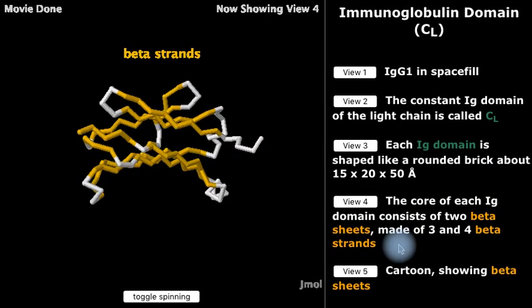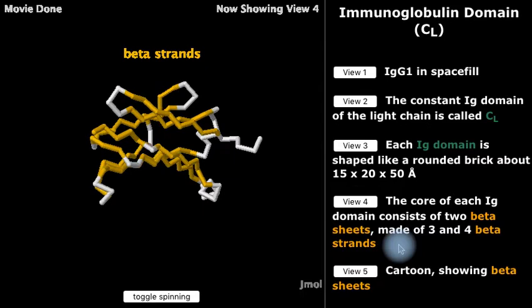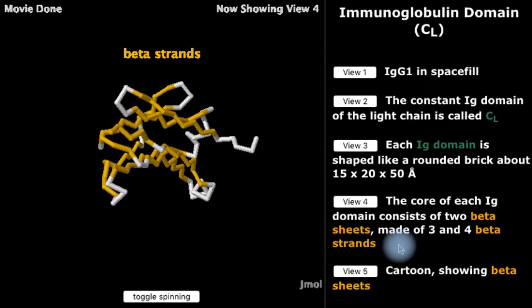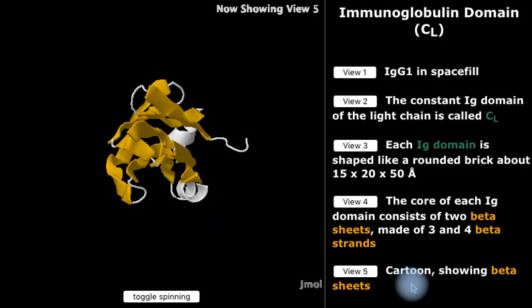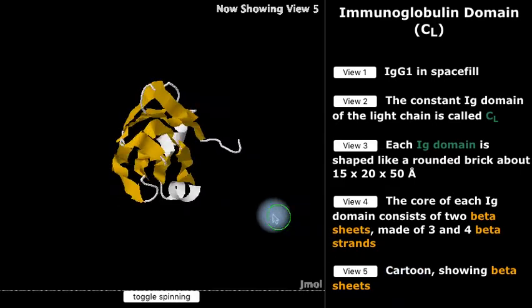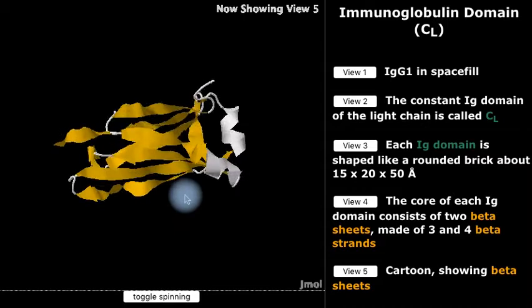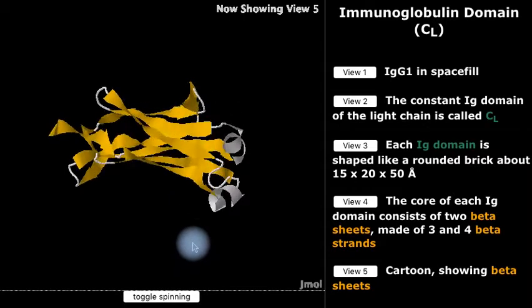Immunoglobulin domains are made up of beta strands connected by loops shown in white. The beta strands fit together to form two beta sheets.